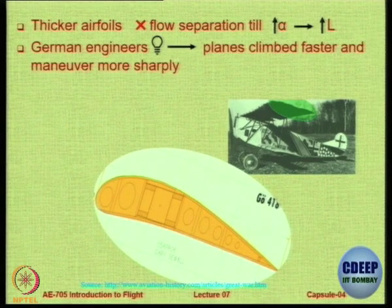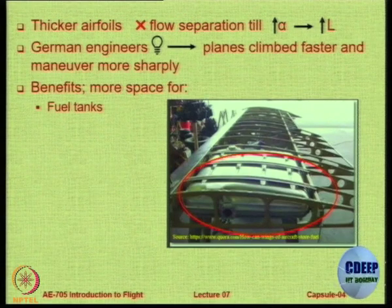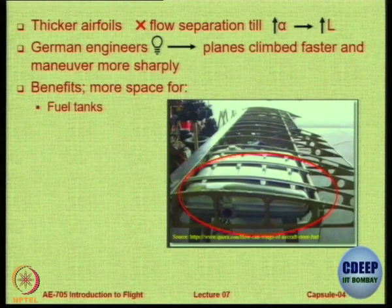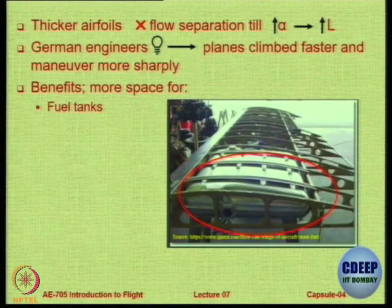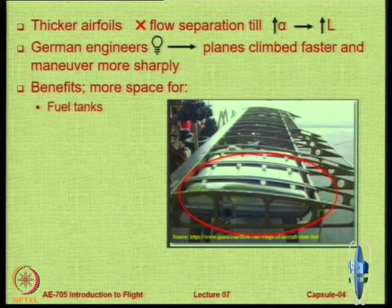When the Allied forces investigated the captured aircraft and found the reason was a thicker aerofoil, research on thick aerofoils began. You also get more space with greater thickness. The wing is normally where we keep the fuel tank, so the thicker the wing, the larger the space for the fuel tank, as you can see in this picture showing a bladder fuel tank enclosed between the front spar and the rear spar. The front spar is typically at around the quarter-chord location from the leading edge, and the rear spar — the main anchor for control surfaces like ailerons and flaps — occurs at around 70 to 75 percent of the chord.